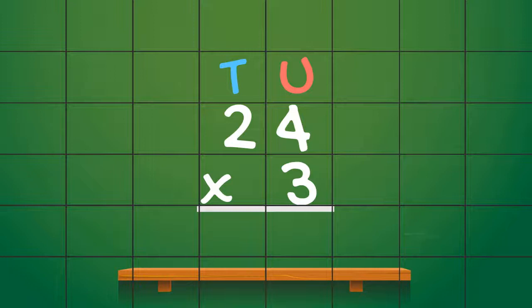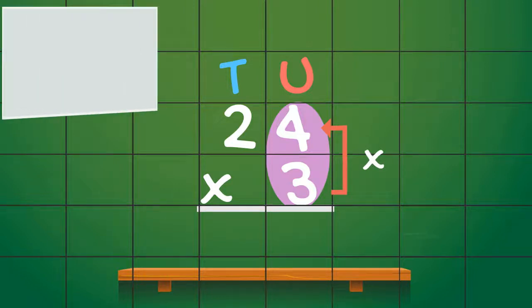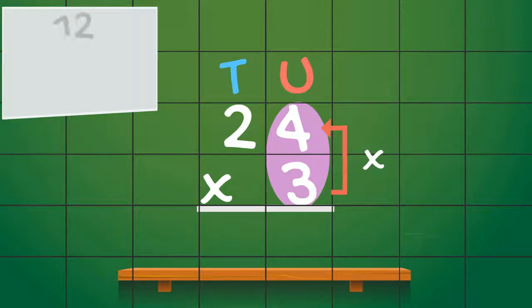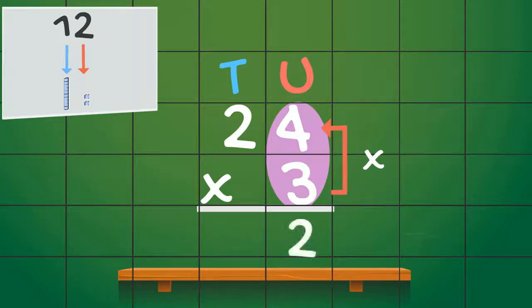When we have a sum like this, with a single digit number on the bottom, it's quite easy. First we multiply the units by the units. So 3 multiplied by 4 is equal to 12. Now watch carefully how we write that 12 — this is where place value is very important. When we look at that number 12, there are two parts to it: there are the two units and there is the one 10. Only the units can be placed in the unit column, so we can put that in here. The one 10 we are going to have to carry over to the tens column, like this.